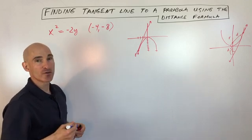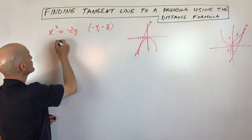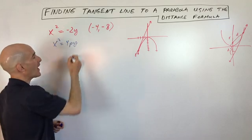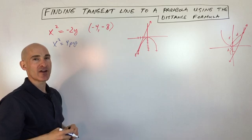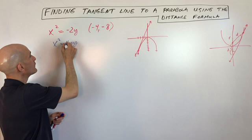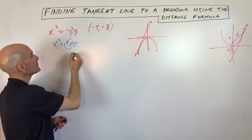And so what we're going to do first thing is we're going to find the focus. So if you notice, this is in the form x squared equals 4py. And if you need to reference how to graph parabolas, I'll have a link for the video for that. But basically, you can see that 4p equals negative 2.